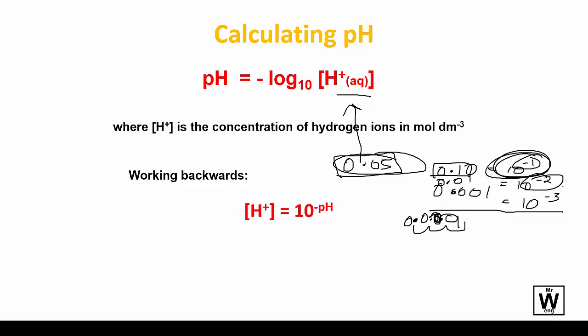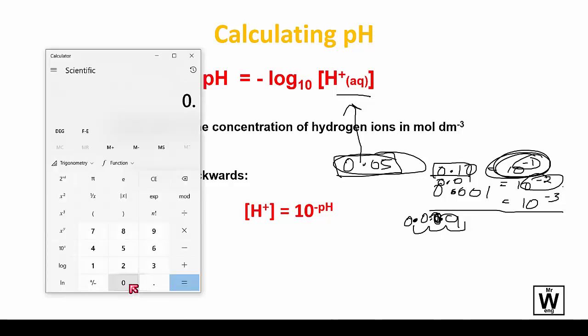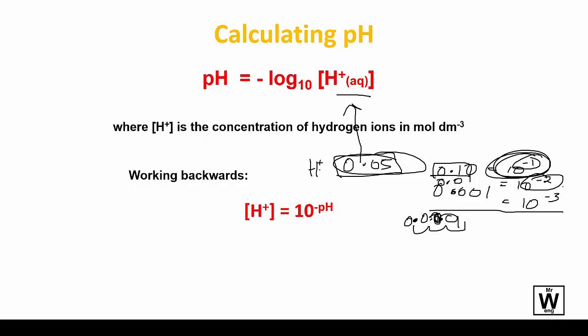I'll just do that for argument's sake, so 0.05 log negative, and the pH of that, if that's the hydrogen ion concentration, is 1.3, which is what we would expect because 0.05 is somewhere in between these two hydrogen ion concentrations, which are pH 1 and pH 2.